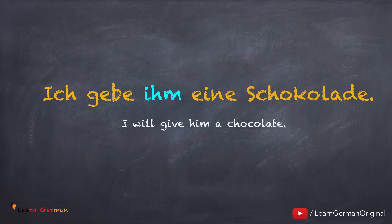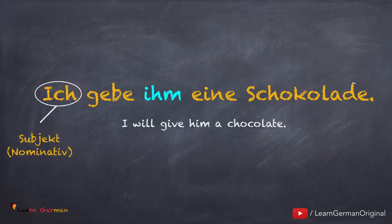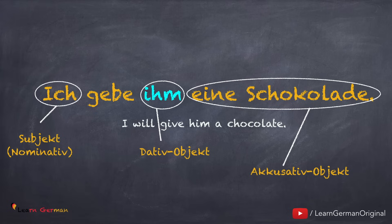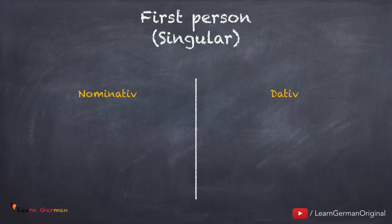'Ich gebe ihm eine Schokolade.' In this sentence, ich is the subject, hence Nominativ, whereas eine Schokolade is the accusative object — that is the direct object. The indirect object is ihm, and it's the dative object. Since the personal pronoun for Michael is er, in this case we need a dative personal pronoun for er, which is ihm.